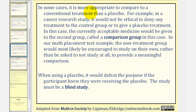In some cases, it is more appropriate to compare to a conventional treatment than a placebo. For example, in a cancer research study, it would not be ethical to deny any treatment to the control group or to give a placebo treatment. In this case, the currently acceptable medicine would be given to the second group, now called a comparison group. In our math placement test example, the non-treatment group would most likely be encouraged to study on their own rather than be asked to not study at all, to provide a meaningful comparison.